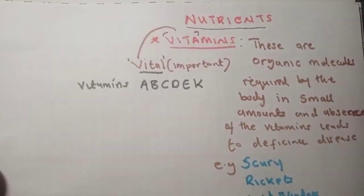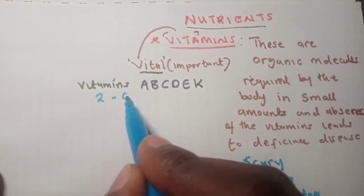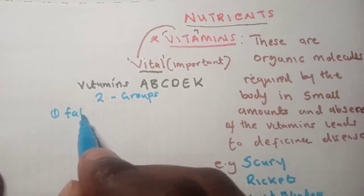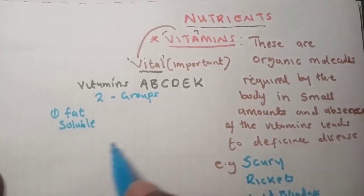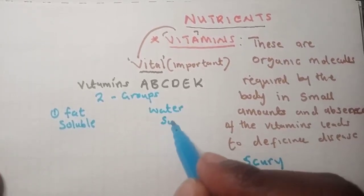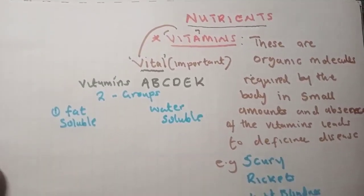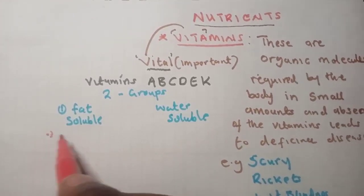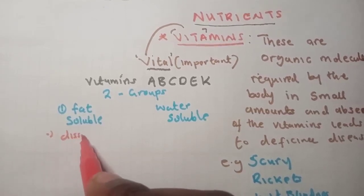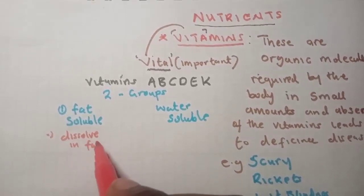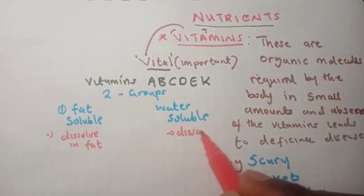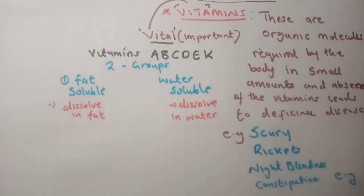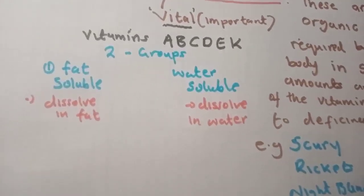Among these vitamins we have two groups. The first group is vitamins that are fat-soluble, and the second group is water-soluble. Fat-soluble means they dissolve in fat, while water-soluble means they dissolve in water.